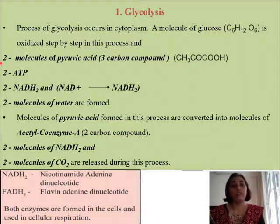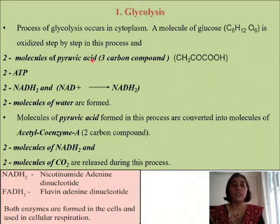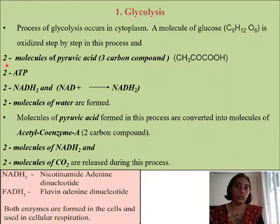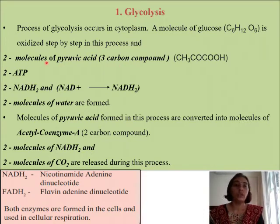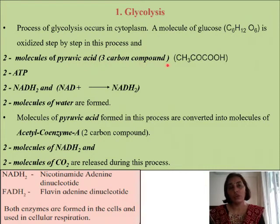So what are the various products obtained on the oxidation? The very first product is two molecules of pyruvic acid, also called pyruvate. Pyruvic acid, or pyruvate, is obtained — two molecules. And it is going to be a three-carbon compound. So you had a six-carbon compound, that is glucose, which has been converted into a three-carbon compound, and you get two molecules of pyruvic acid.